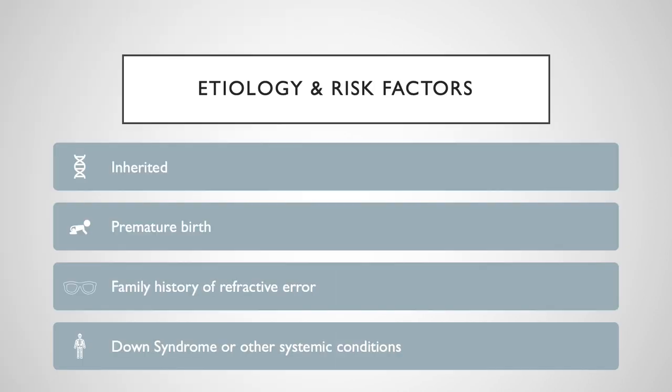While the genetics aren't exactly known, many of these conditions are inherited. Risk factors for children with refractive errors include those who are born prematurely, have parents with refractive errors, have Down syndrome, or have certain systemic conditions. These risk factors apply mostly to myopia, hyperopia, and astigmatism.